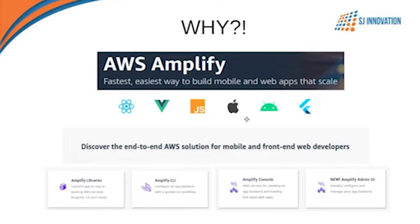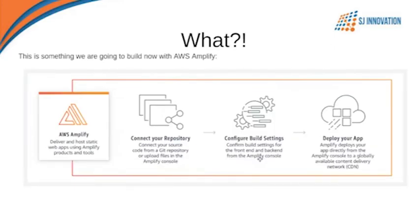For all those different platforms, you can configure your build settings for both front-end and back-end development. When your build setting is completed, you can deploy your application directly through the Amplify Console, which is hassle-free because of its dynamic triggers. If you use any repository, you don't need to deploy your code changes every time — it will automatically trigger deployment for any change on a specific branch.